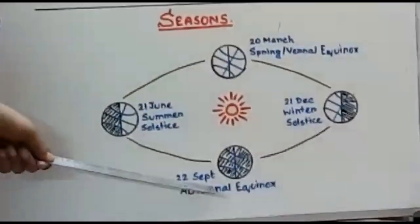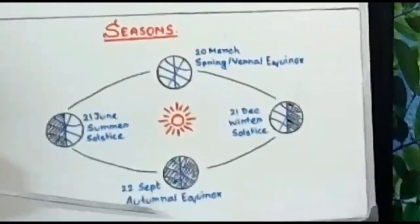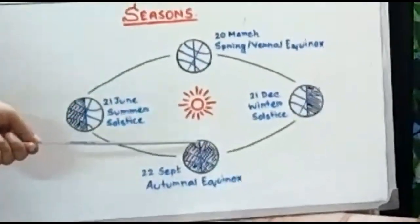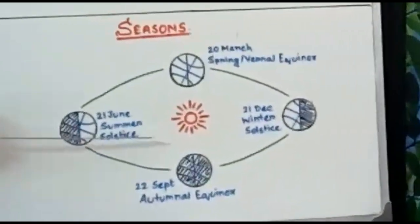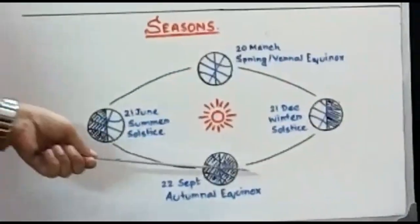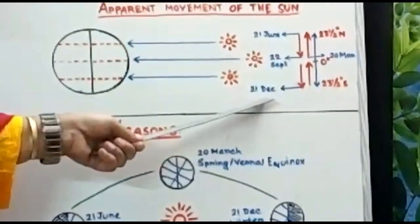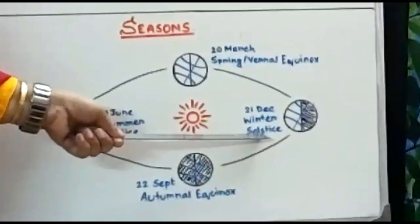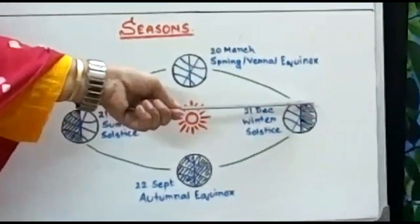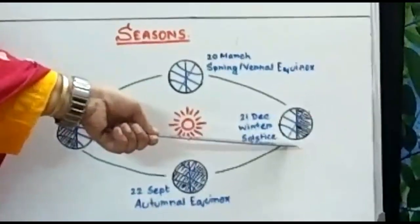After June, the sun comes to the equator once again on 22nd September. Here, autumn occurs in the northern hemisphere because neither hemisphere is too much inclined towards or too far away from the sun. This is autumn for the northern hemisphere and spring for the southern hemisphere. Again the sun moves towards the south and reaches 23.5 degrees south on 21st December — this is called the winter solstice. The northern hemisphere is now far away from the sun and receives less heat, so the northern hemisphere has winter and the southern hemisphere has summer.